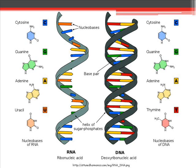A picture goes a long way in explaining something. Here's a great picture showing RNA and DNA side by side. It's really easy to see that RNA has just a single strand. You can see the base pairs on the far left: cytosine, guanine, adenine, and uracil. On the right half of the screen you can see DNA — double-stranded, twisted ladder shape — with the base pairs C, G, A, and T.